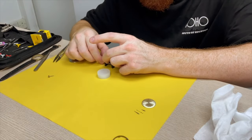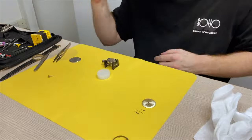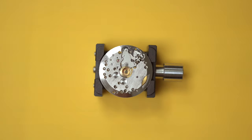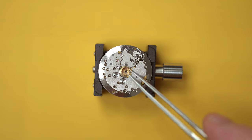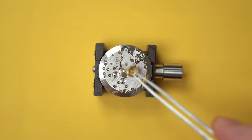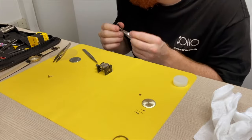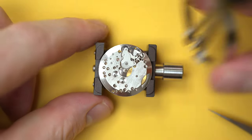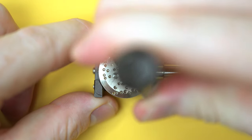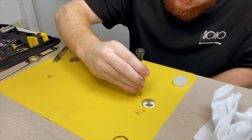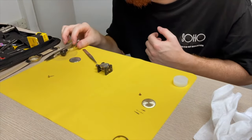So the movement is now out of the case, and I'm going to transfer it over to this movement holder, which just makes it a bit easier to keep the movement in a fixed position whilst we're working on it. As I do this, I'll give you a bit of my background. This is actually only the second watch I've taken apart. So this could go horribly wrong, or it could go surprisingly well.